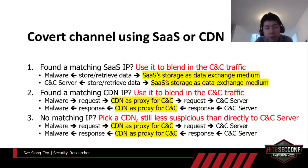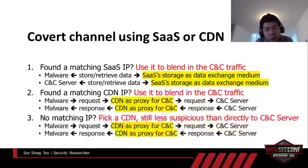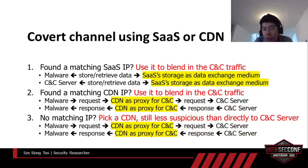Now we have three possible outcomes. First, if a matching cloud service IP address is found, the malware can use that cloud service storage as a C&C channel to exchange data. Second, if a matching CDN IP address is found, the malware can use that CDN endpoint to talk to the C&C server set up previously. Third, if there is no matching IP address, default to any of the selected CDNs and use that CDN endpoint to reach the C&C server. The first two outcomes will blend C&C traffic in as legitimate SaaS usage, helping it stay invisible from IDS and SIEM detection. The third outcome might trigger an alert, but there's a high chance it'll be treated as a false alarm — since a SOC engineer seeing a reputable CDN IP might assume it's just an application downloading updates.